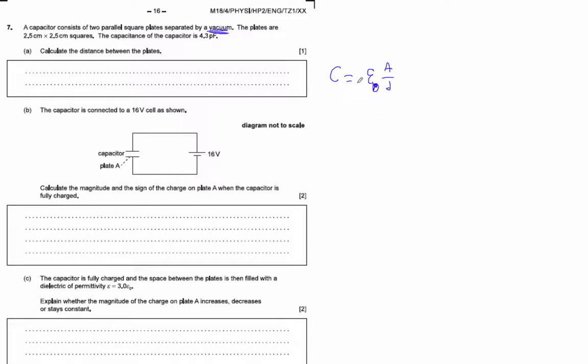If it was air, it would be essentially the same. So look this up in the front of the data packet—the permittivity of free space.